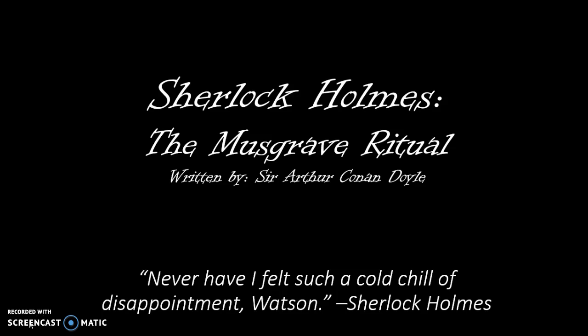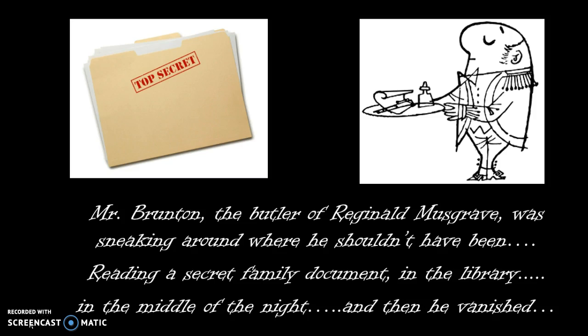Mr. Brunton, the butler of Reginald Musgrave, was sneaking around where he shouldn't have been, reading a secret family document in the library in the middle of the night, and then vanished.